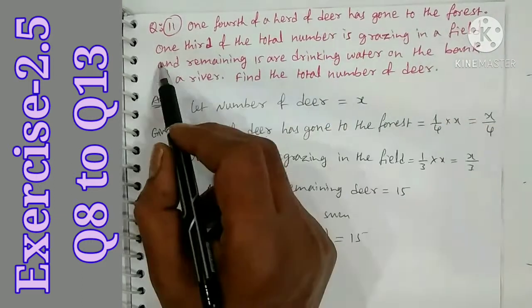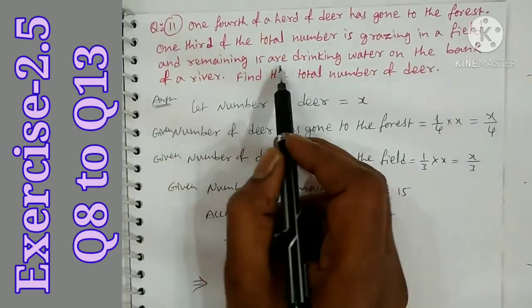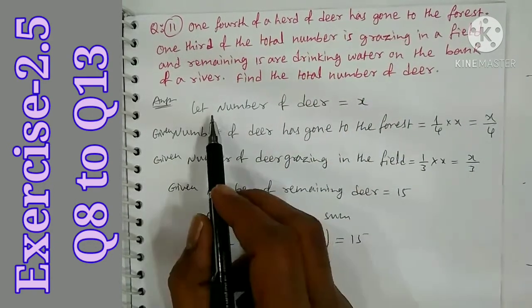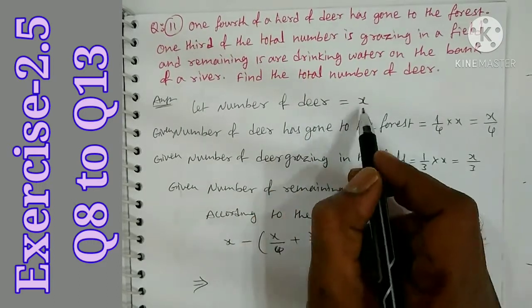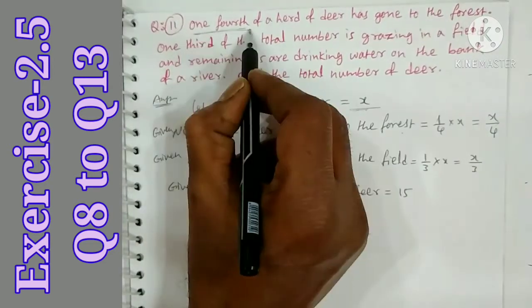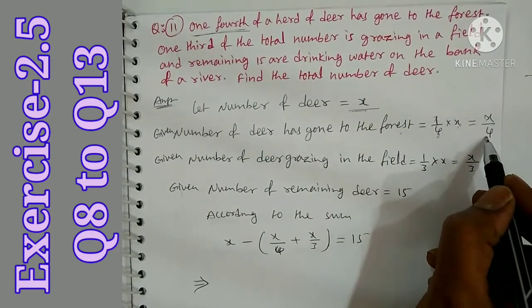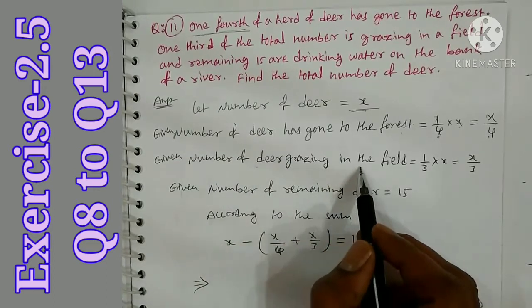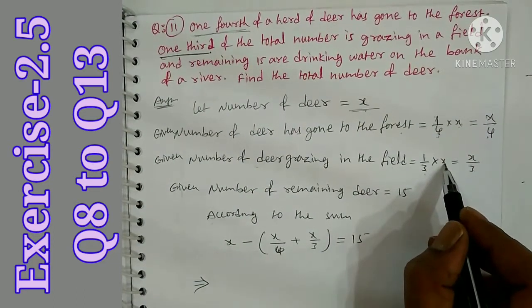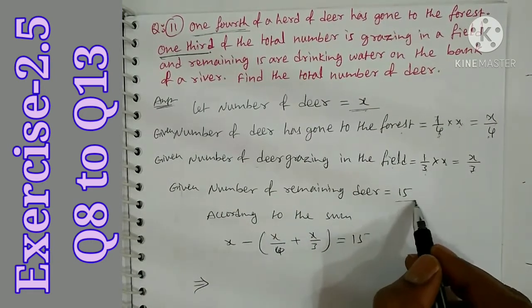Question 11: One-fourth of a herd of deer has gone to the forest, one-third of the total number is grazing in a field, and the remaining 15 are drinking water on the bank of the river. Find the total number of deer. Let the number of deer be x.